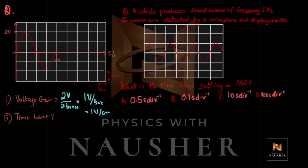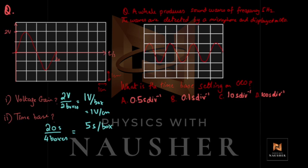Next they're asking for the time base. Time base is your time period divided by the number of boxes horizontally. Your time period is 20 seconds in 4 boxes, so 20 ÷ 4 = 5 seconds per box, or 5 seconds per centimeter. So: one box is 5 seconds, two boxes 10 seconds, three boxes 15 seconds, four boxes 20 seconds.